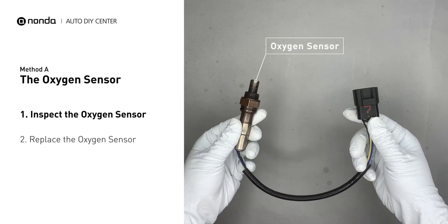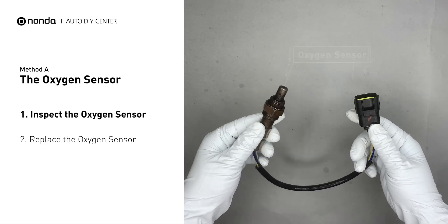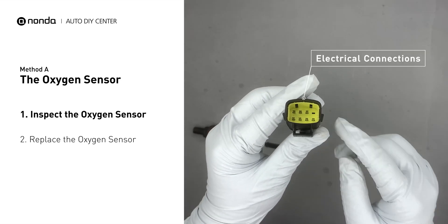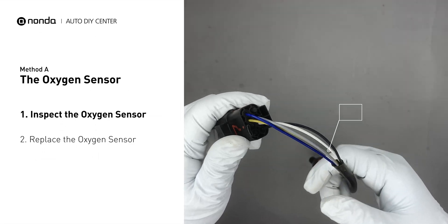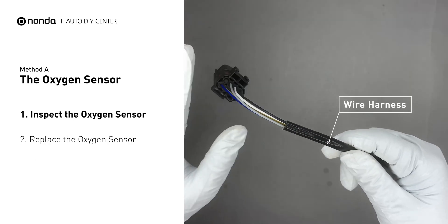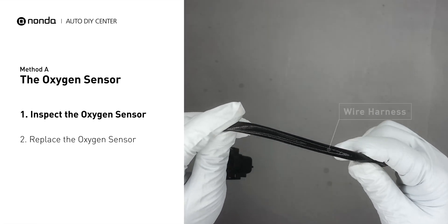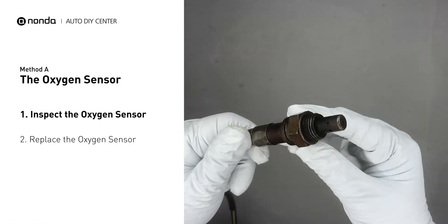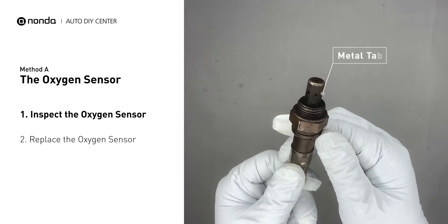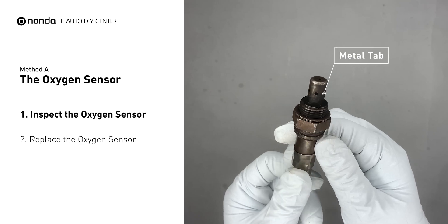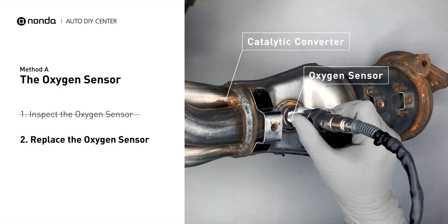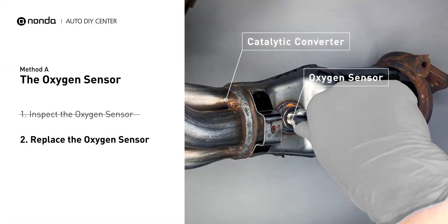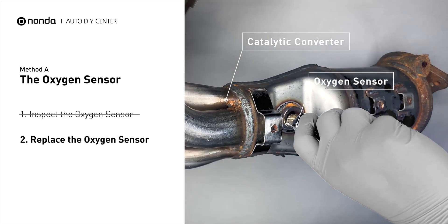Visually check the oxygen sensor's electrical connections, wire harness, and metal tabs for any damages. If damages are found, then replace the oxygen sensor.